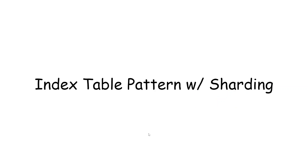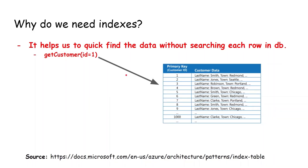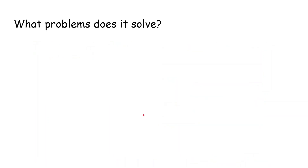In this video we're going to take a look at the index table pattern with sharding. To understand what the index table pattern is, we need to first understand why we need indexes in a database. Here we have a table which contains customer data with a customer ID as the primary key. This helps us quickly find data without searching each and every single row — so if I want to get a customer based on an ID, I can quickly locate that data without iterating every row.